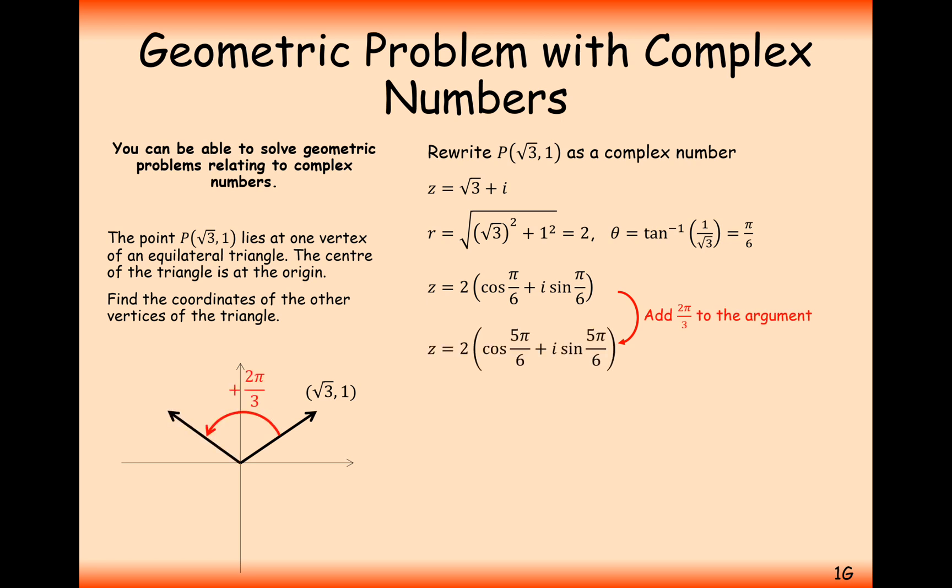To get to the next one, that would be 5π by 6. Add another 2π by 3 onto the argument, and that will get you to 9π by 6. But that's outside of the range from minus π to π, so we'll need to do a correction on that to minus π by 2.